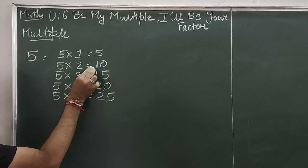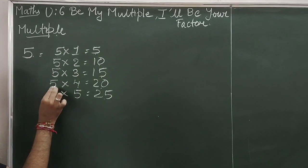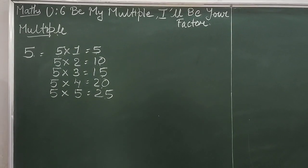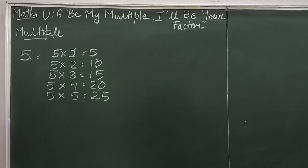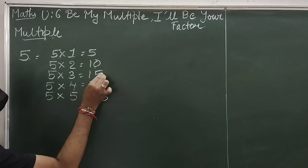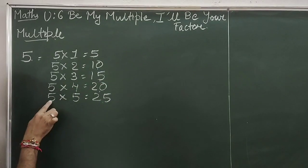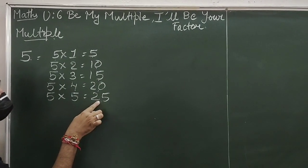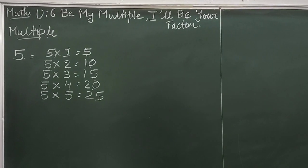If we multiply 5 by 2 we get 10, 5 by 3 is 15, 5 by 4 is 20, 5 by 5 is 25. So these are the multiples of the number 5. In a multiple, if we divide any of these numbers by 5, we will get an exact answer without any remainder.